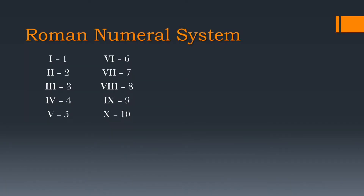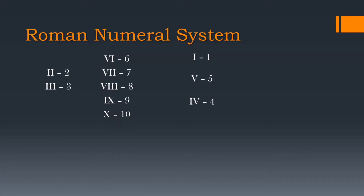Here I have taken the first 10 Roman numbers. Now if I take the first number, you can see that I is representing 1. Whereas if I take the fifth number, you can see that V is representing 5. 4 is represented by I followed by V, where the first symbol I is representing 1 and the second symbol V is representing 5.